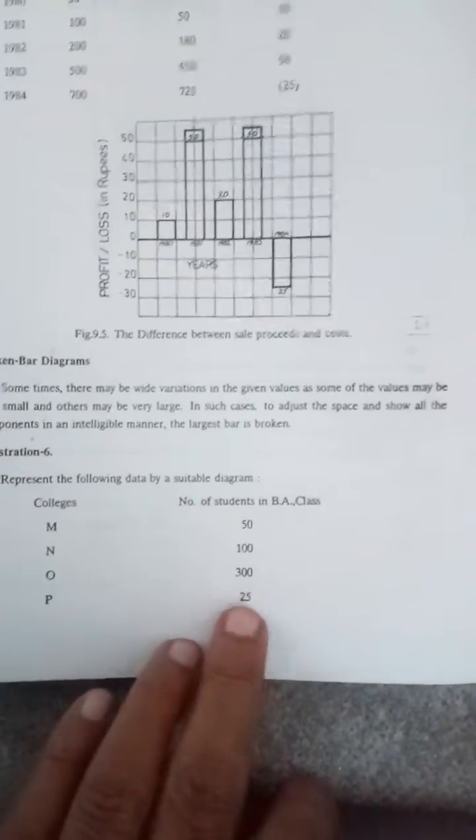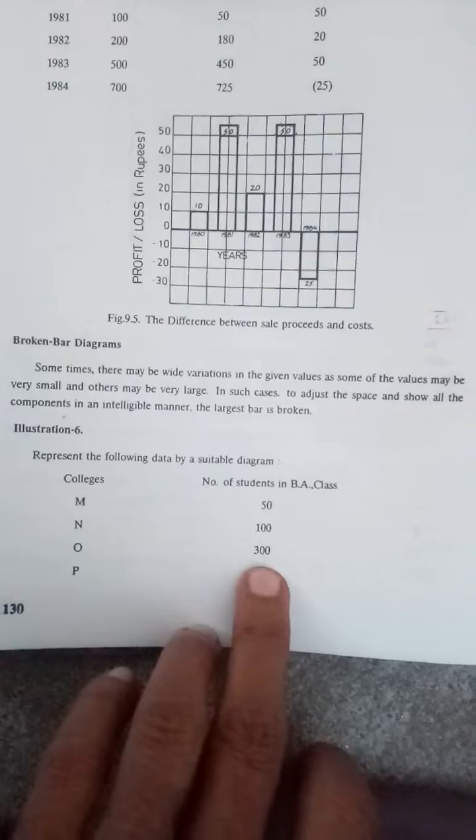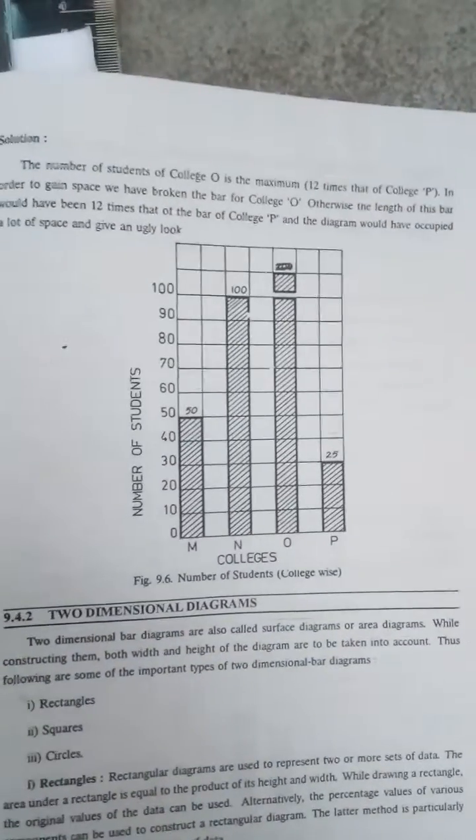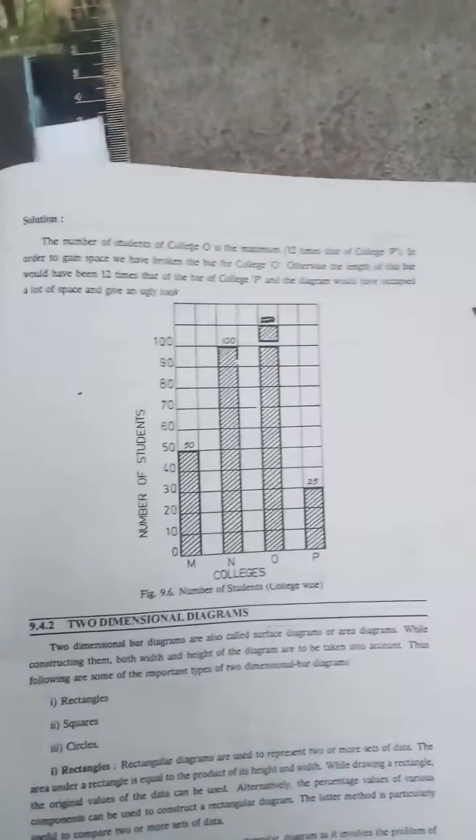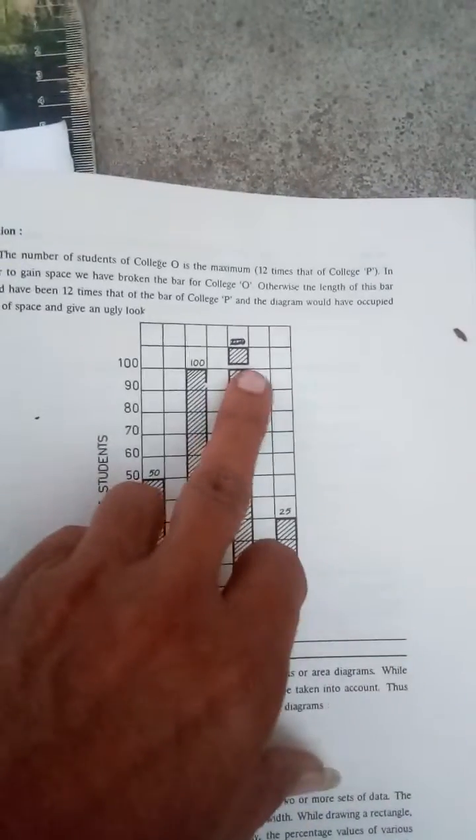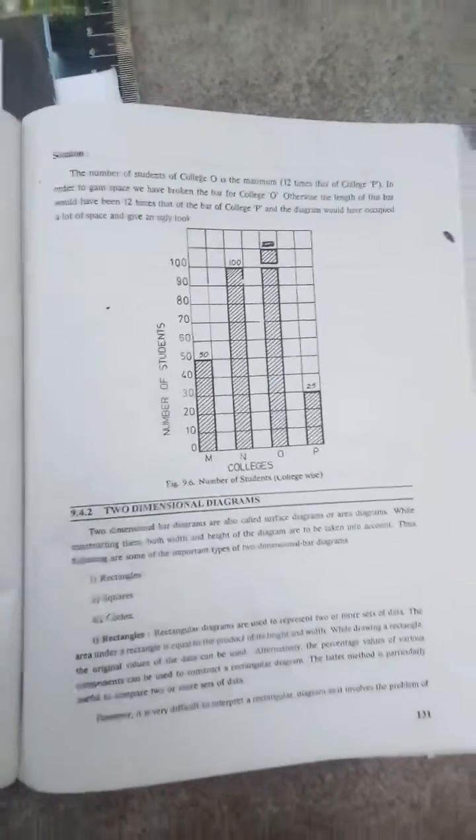When there is a variation in the given data, this is 25, 50, 100, but this is 300. Here we use broken bar diagram. The highest stage is 100, then break it up to make 300. I can show 100, then just break it, so I can do 300. No need to show the full 300.